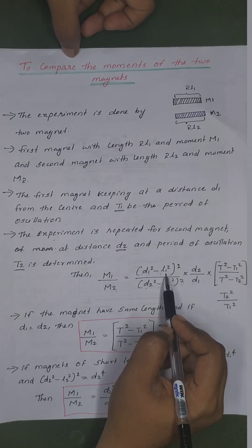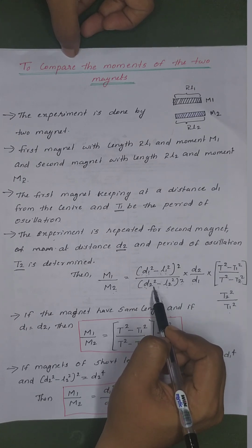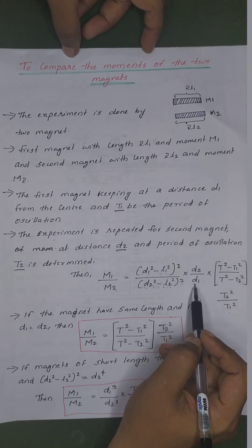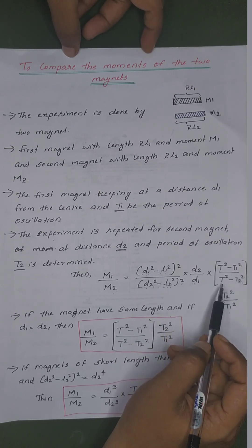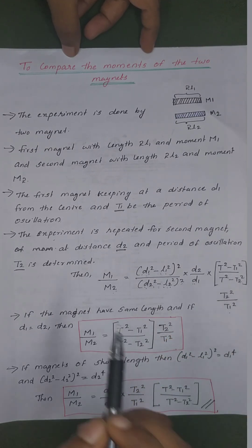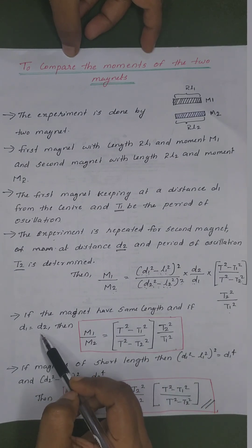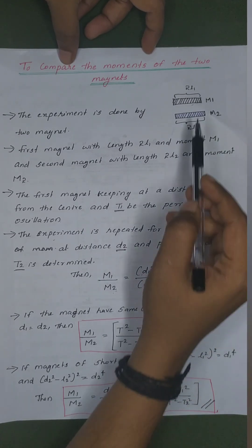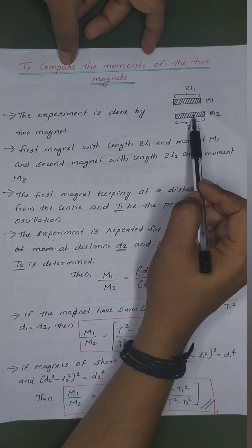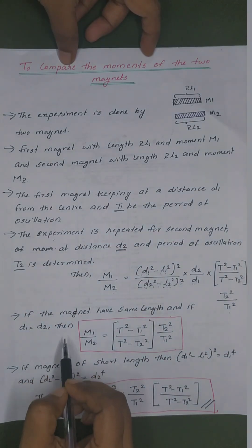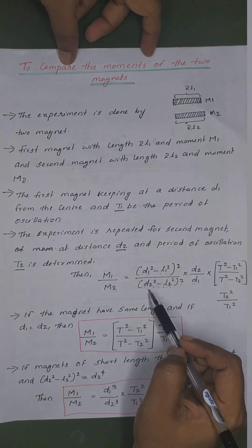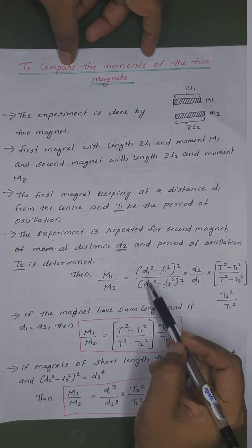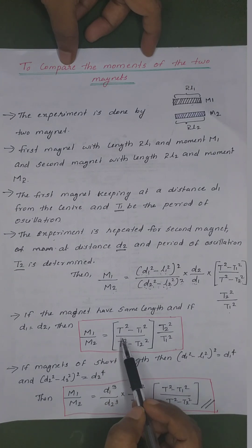We discuss the period of oscillation in terms of T1 squared and T2 squared. If the magnets have the same length and if D1 is equal to D2, then the two magnet lengths are equal. The distance is equal to the magnetometer distance D1, and the term D2 equals D1 equals 1. Then M1 by M2 is equal to T2 minus T1 squared.